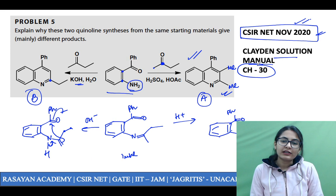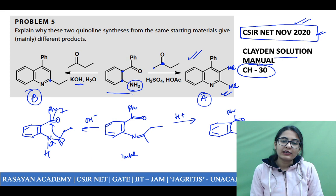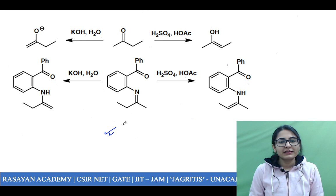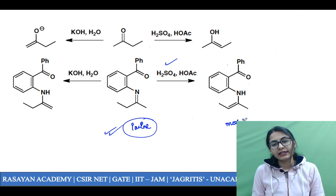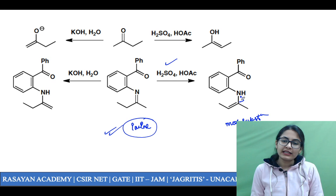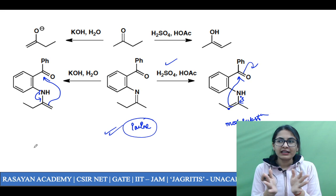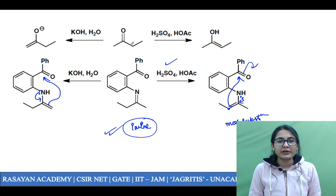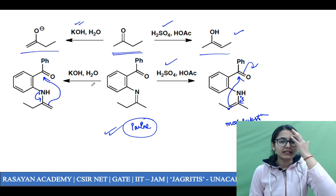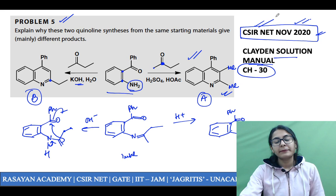From Clayden chapter 30, synthesis of aromatic heterocycles, problem number 5 — you first form this imine. In the presence of acid it gives you the more substituted enamine, and you can then do the mechanism — enamine reacts like enol, attacking from this carbon onto the carbonyl to give your product. The less substituted enamine attacks from the other side to give the other product. Two different products in acid versus basic medium because of formation of different enamines — just like formation of different enols from a ketone. More substituted enol in acidic medium and less substituted enolate in basic medium. A very important four-mark question in your November 2020 paper.